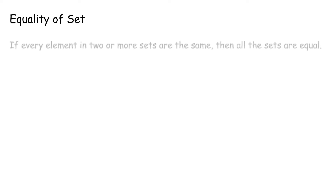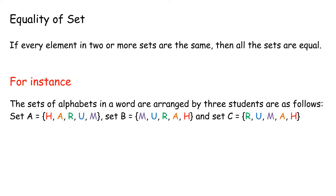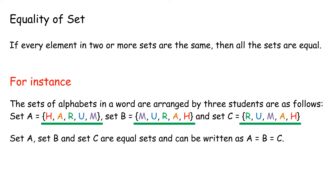Equality of Set. If every element in two or more sets are the same, then all the sets are equal. For instance, the sets of alphabets in a word arranged by three students are: Set A = {H, A, R, U, M}, Set B = {M, U, R, A, H}, and Set C = {R, U, M, A, H}. Every element in sets A, B, and C are the same. So sets A, B, and C are known as equal sets and can be written as A = B = C. Thus A = B, A = C, or B = C.